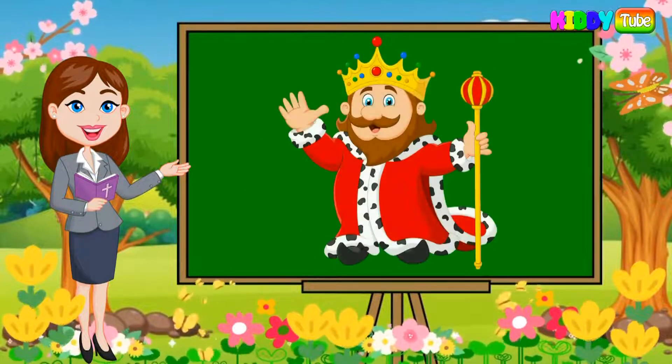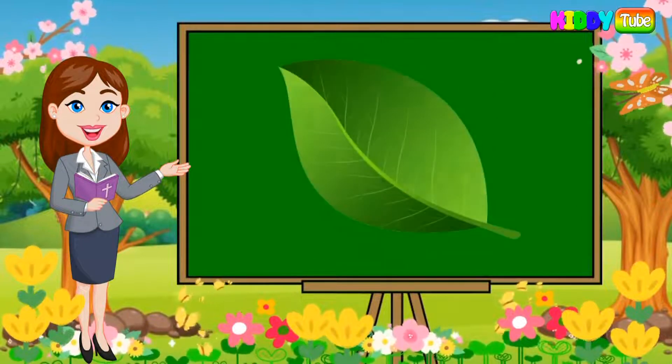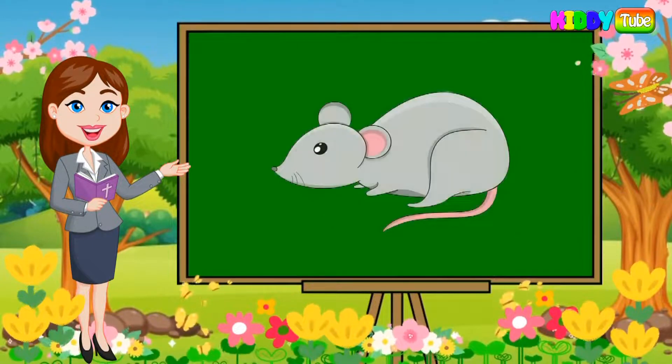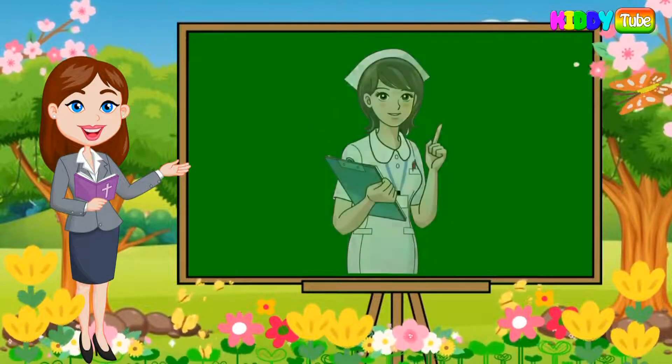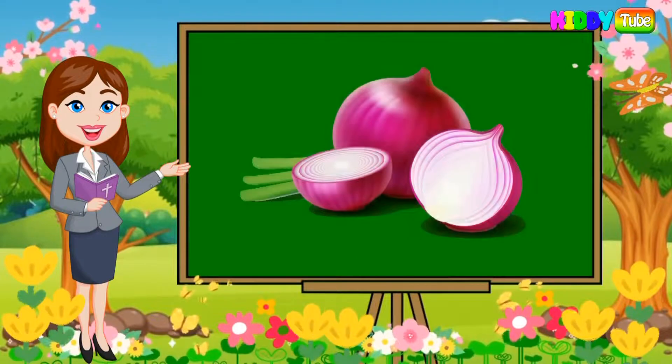K is for king. L is for leaf. M is for mouse. N is for nurse. O is for onion.